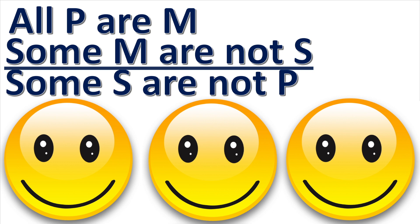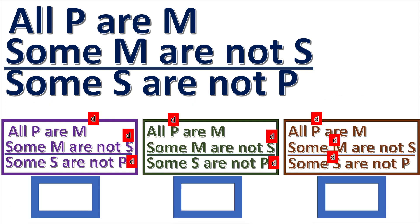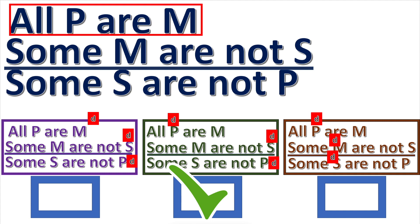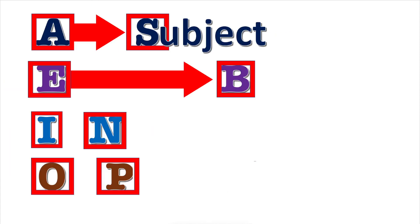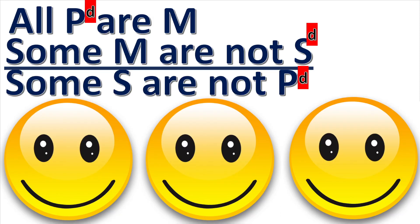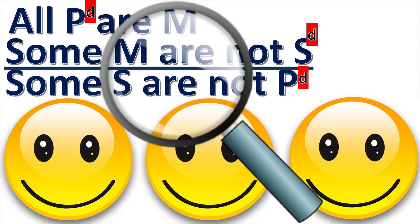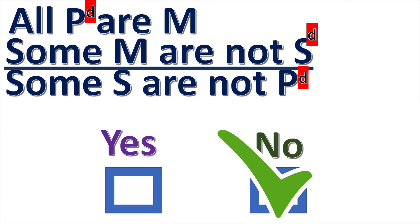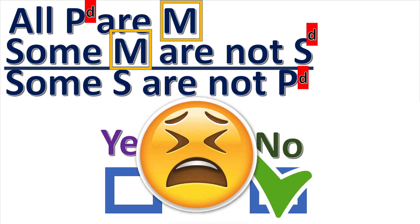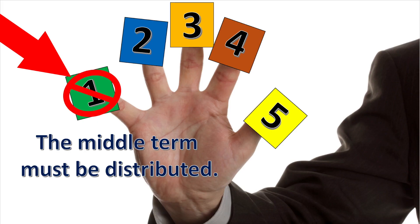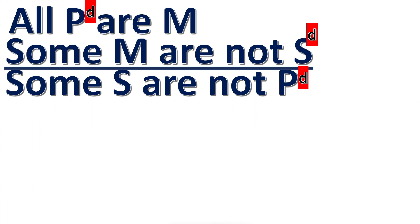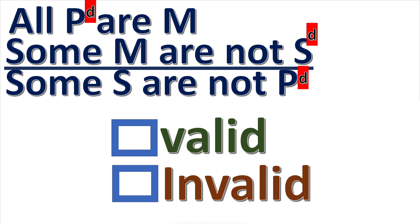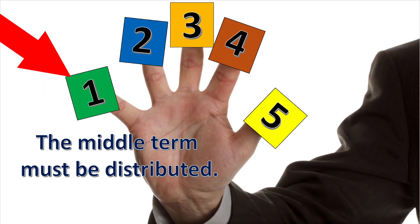Here is a quick practice problem. Choose the correctly marked terms. A propositions distribute the subject and O propositions distribute the predicate. Now look at the syllogism — is the middle term distributed? The middle term is not distributed in either premise, so rule one is broken. The undistributed middle fallacy is committed, and the syllogism is invalid because rule one is broken.